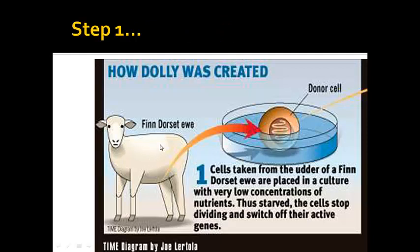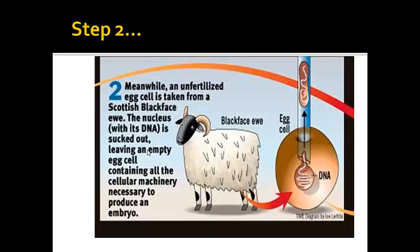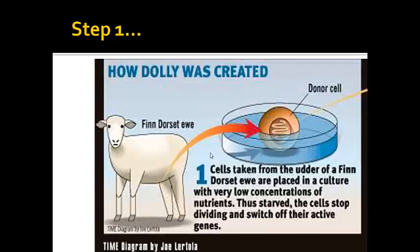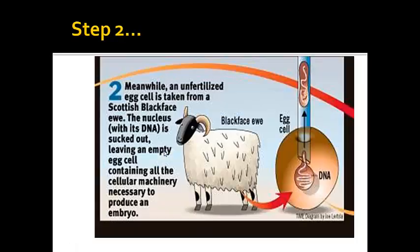What they did is they took a cell from one type of sheep, a Finn Dorset. They took the nucleus out of that cell and got rid of the rest of the cell. The next step was then to go to a different type of sheep, a blackface sheep, and to take the nucleus out of that sheep's cell. So we now have a nucleus from our first sheep and an empty cell — missing its nucleus — from another sheep.